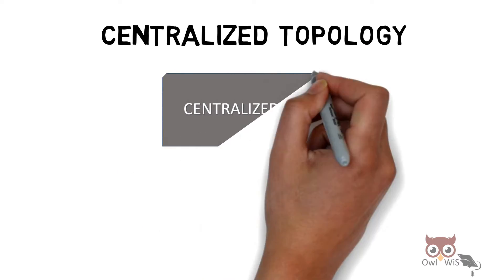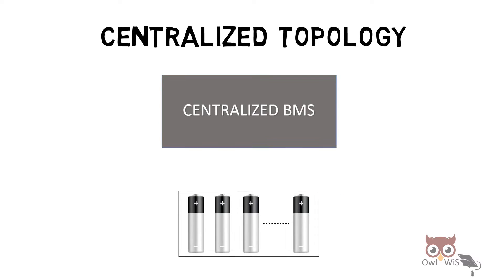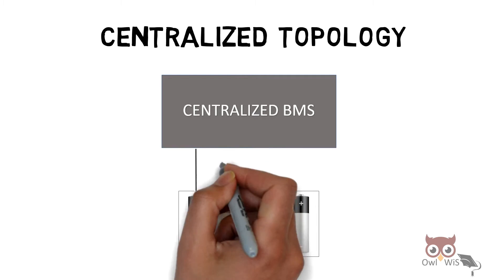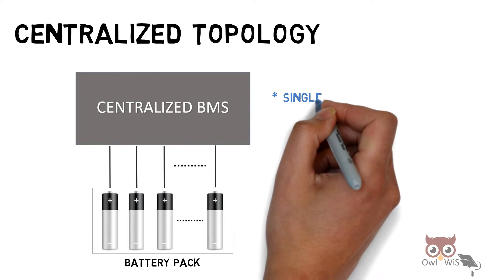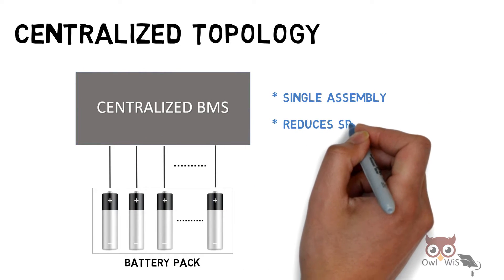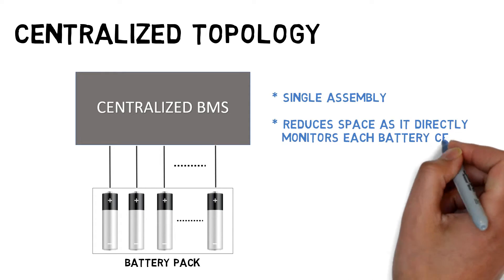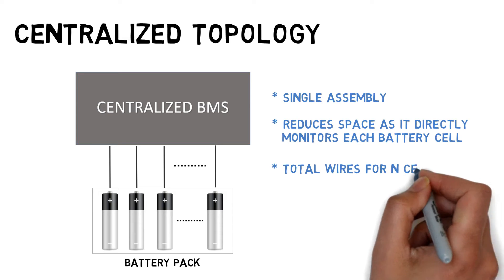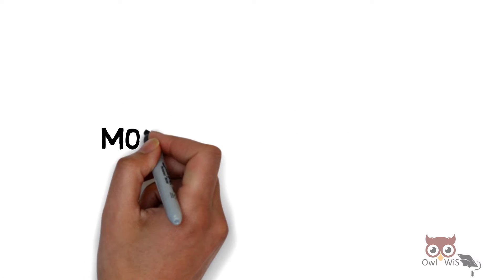Centralized Topology: Here, there is a centralized BMS and a battery pack, and each individual cell of the battery pack is monitored by the BMS. So there is a single assembly which reduces space as it directly monitors each battery cell. Total wires for N cells connected in series are N plus 1. It is a low cost approach.